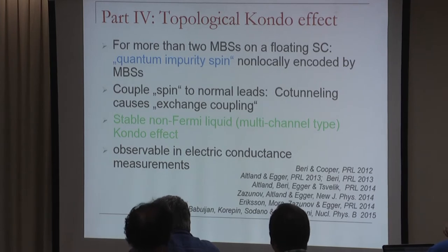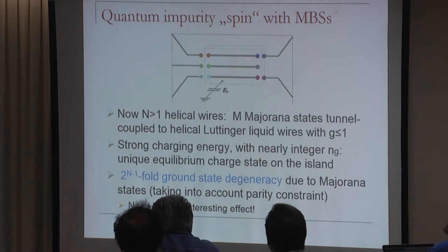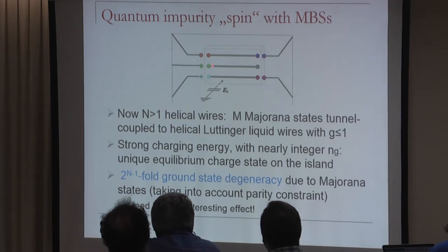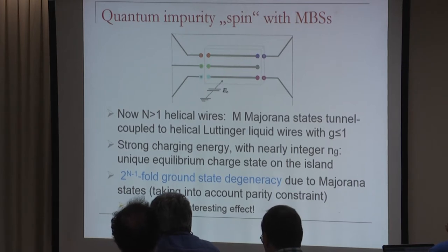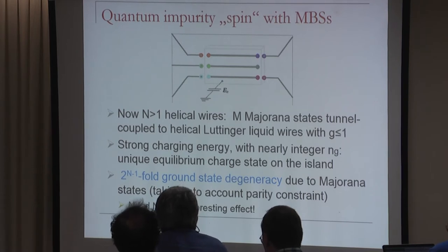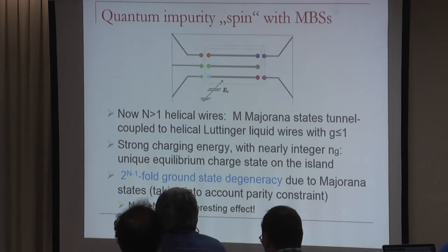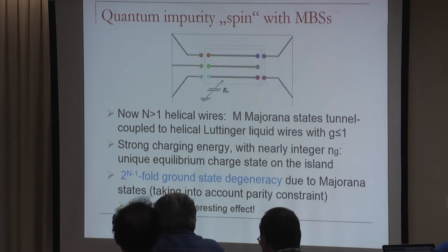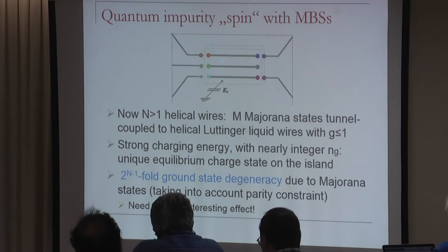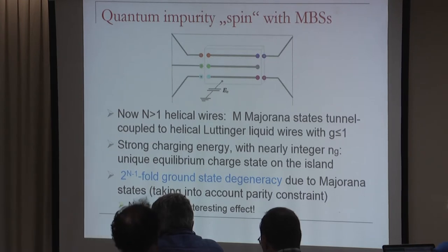We have a superconductor with N nanowires deposited on top, each carrying a pair of Majorana fermions. In that picture N equals 6, and M, the number of Majorana fermions, can be up to 2N—we count only those connected to leads. The minimal interesting example is M equal to 3, when we have just 3 Majorana fermions coupled to leads. With just 2, as discussed, there is no ground state degeneracy—that's the Majorana single charge transistor.